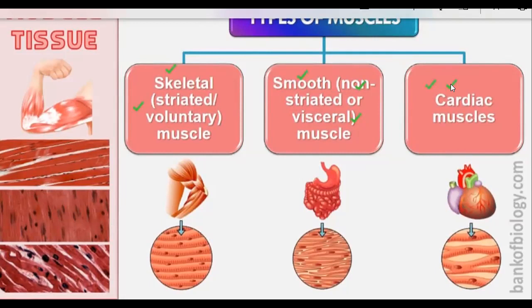In each muscle there are myofibrils, and within myofibrils there are actin and myosin. Actin and myosin perform contraction and relaxation, therefore any organ can move. Now you should remember that muscles are of three types: the first is voluntary muscles, the second is involuntary muscles, and the third is cardiac muscles.